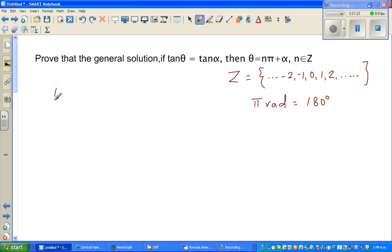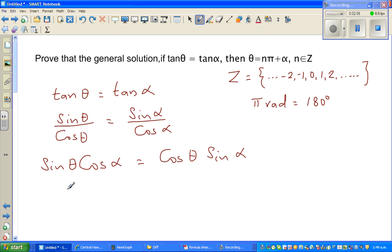So let's get started. We know that if we can express tan θ as tan α, we want to prove this. So I'm going to write this as sin θ over cos θ is equal to, this should be α, sin α over cos α. So I'm going to cross multiply. So this is sin θ times cos α is equal to cos θ times sin α. So bringing this to this side, so this becomes sin θ times cos α minus cos θ times sin α is equal to 0.